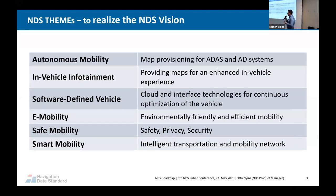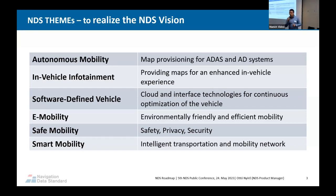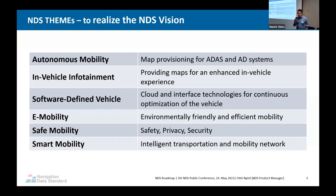These are the six themes — we call them long-term strategic objectives or key focus areas — to realize the NDS vision. In the past we had quite a lot, but now we've reduced it to six: autonomous mobility, IVI (how to provision maps for autonomous mobility requirements and IVI), software-defined vehicle (a new item and one of the biggest industry challenges), e-mobility, safe mobility (all map aspects regarding safety), and smart mobility.